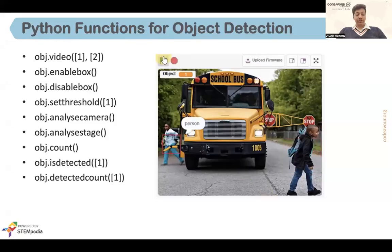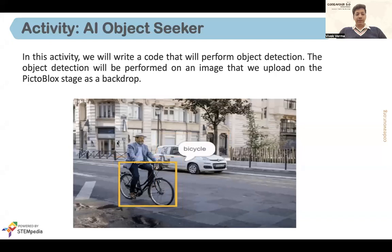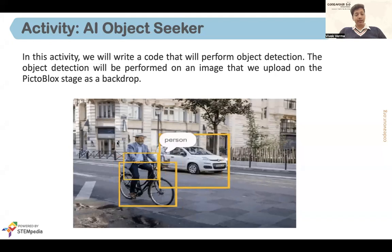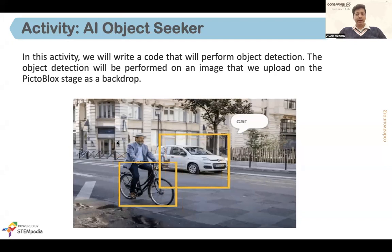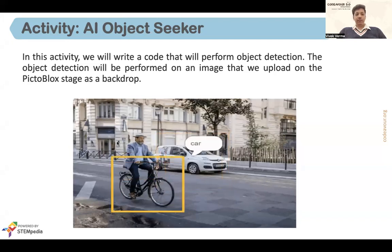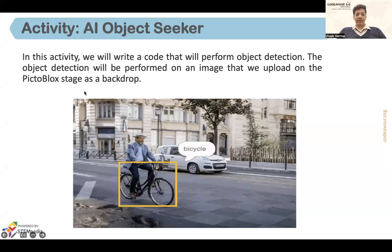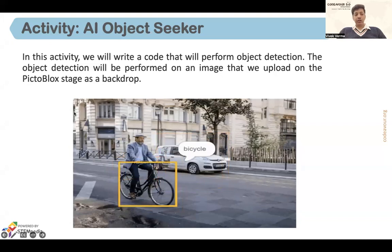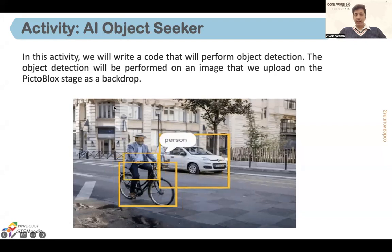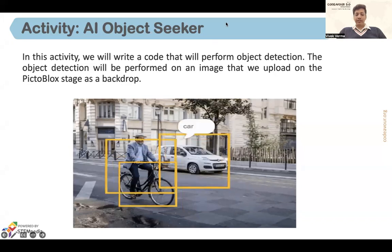That was about the functions of object detection. Now let's move to the activity. We are going to make an AI Object Seeker activity in which we will write code that performs object detection — it will detect the objects that are present and allow us to identify them. This is what the output will look like. You can use any image you like, but make sure the image is clear and fits on the stage. Let's head to PictoBlox and start coding.